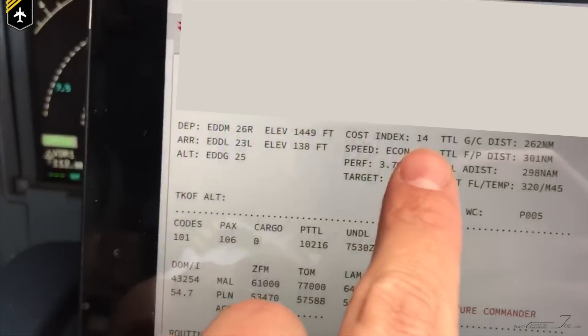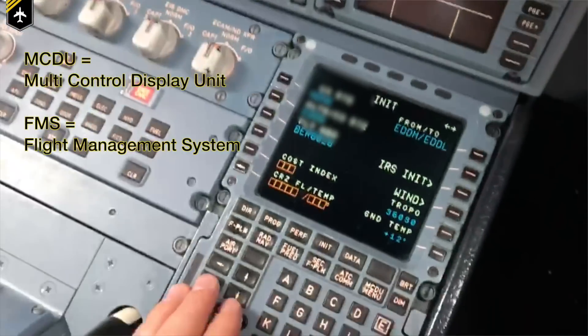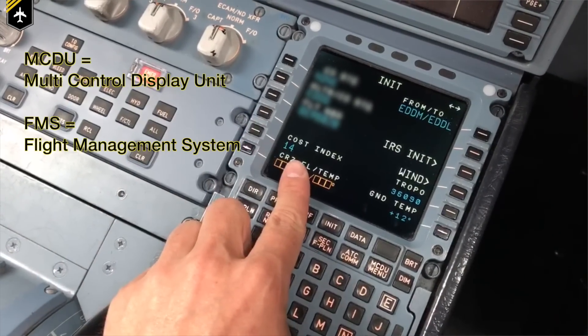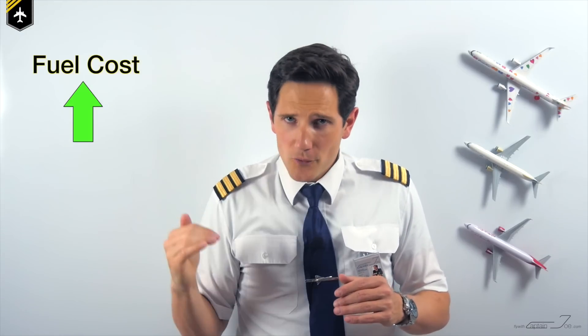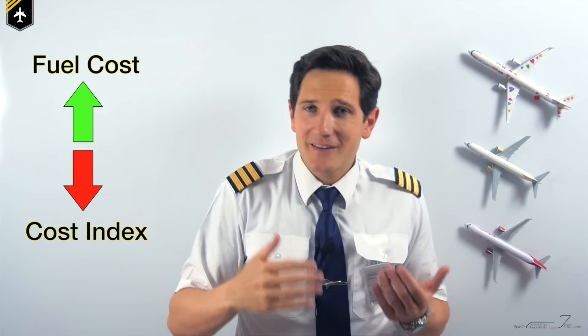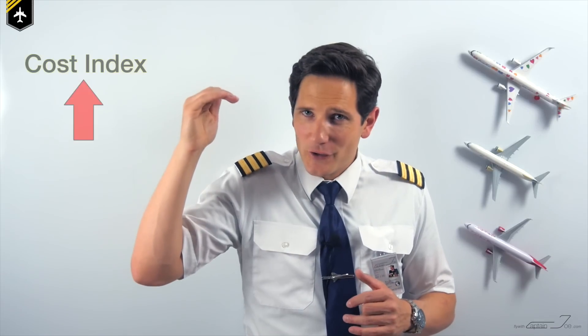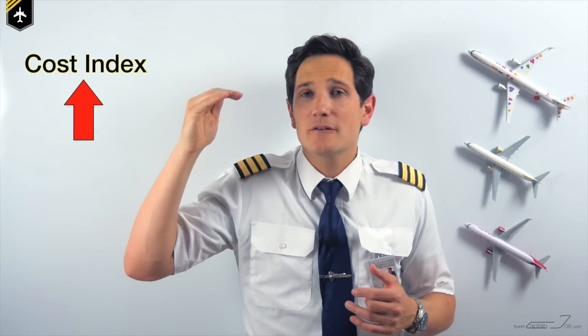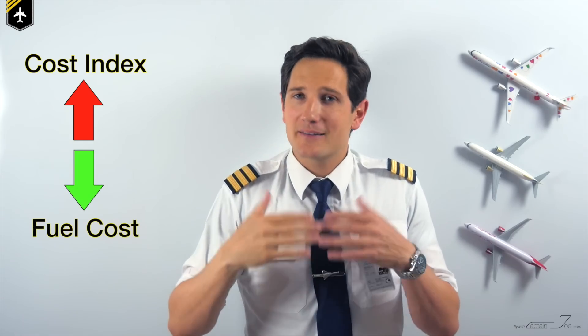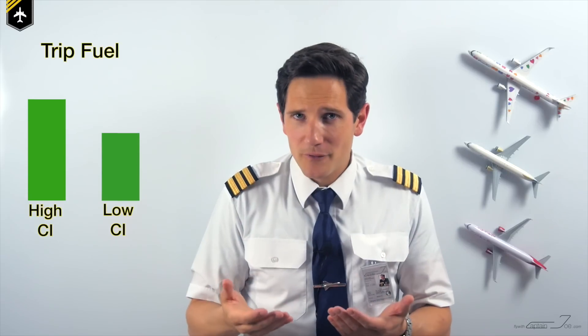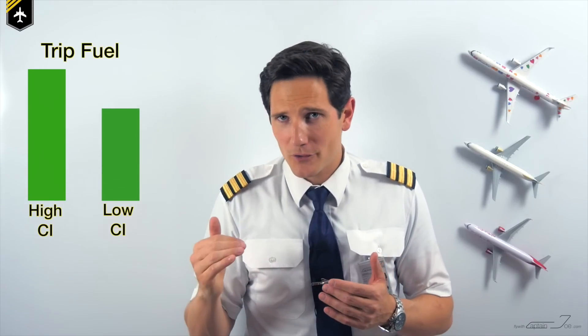As you type in the cost index on the MCDU, the FMS will calculate the speed for the different flight phases — climb, cruise, and descent — in accordance with the cost index. The more expensive the fuel, the lower the cost index, and the slower the aircraft will fly to be more economically efficient. The higher the cost index, the faster the plane will fly due to the fact that the fuel is cheap. But keep in mind, flying faster also means your engines will burn more fuel per hour, meaning you'll need more trip fuel for the same distance compared to a lower cost index.